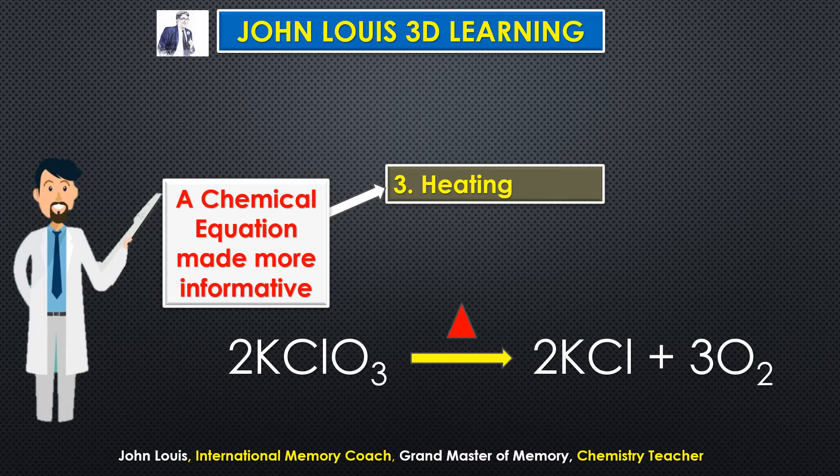The third additional piece of information is heating — whether we have to heat the reactants or not. This is indicated above or below the arrow mark by a triangle (Δ). By putting a triangle, it is understood that external heat is supplied. For example, we have to heat potassium chlorate for that decomposition reaction to take place.